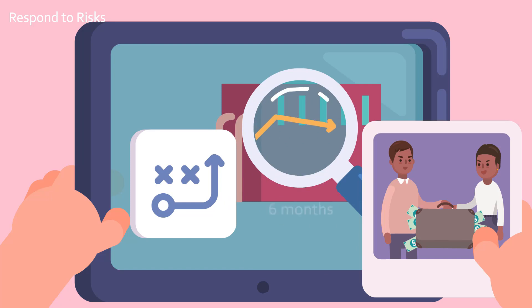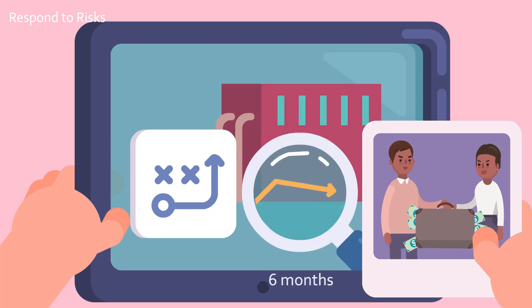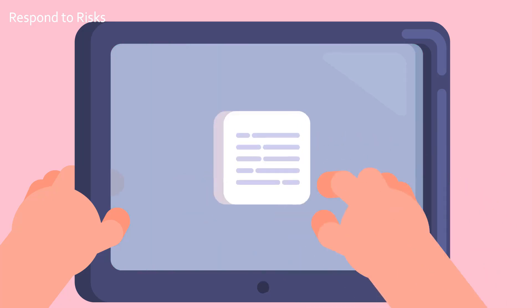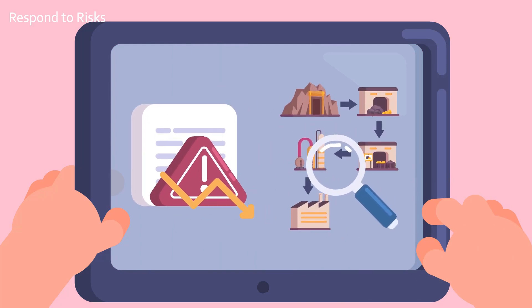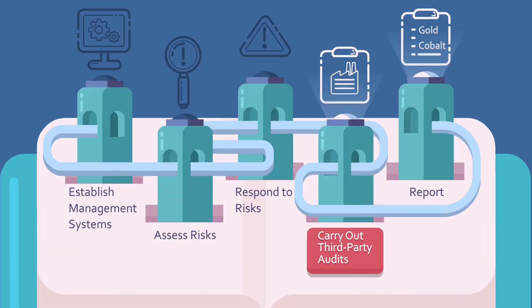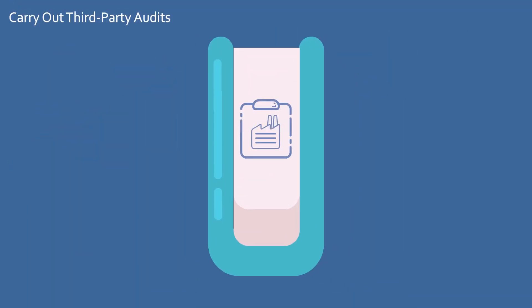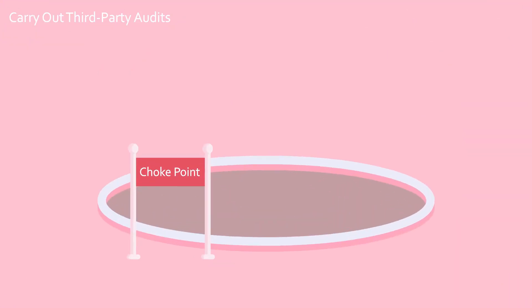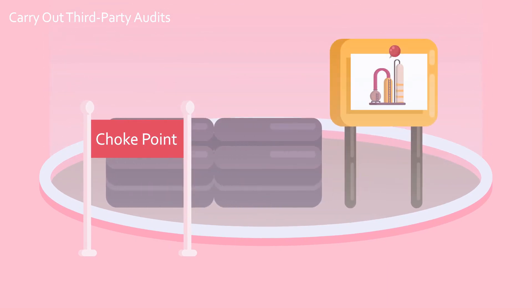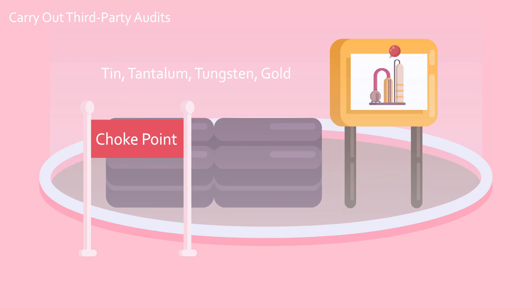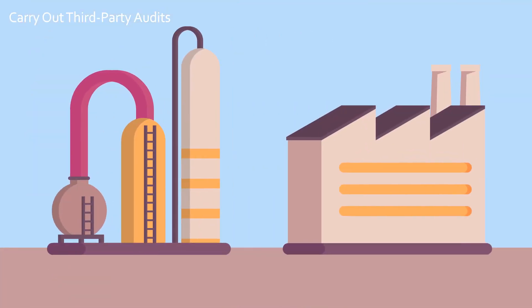If there's no improvement within six months, disengage with that supplier. Make a plan for how to mitigate the risks you identified, and continue to monitor the supply chain with support from stakeholder networks. The guidance recommends identifying, if possible, a choke point in the supply chain — the point where the mineral undergoes a transformation and where there are few actors. In the case of 3TGs and cobalt, this generally means the smelter or refiner. This is where the audit takes place.